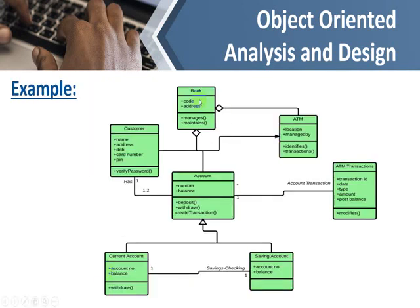Here we have another example with the classes: Bank, ATM, Customer, and Account. One customer can have minimum one account or maximum two accounts, and one account belongs to only one customer. We can also find generalization here — we have current account and saving account, and both are forming an account, which is the parent class while these are the child classes. This class diagram for an ATM describes each class, its attributes, and the methods being used.